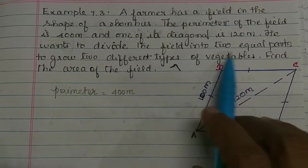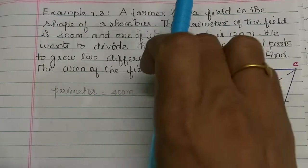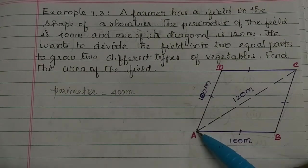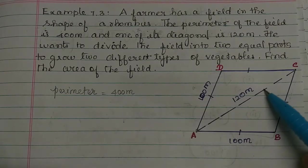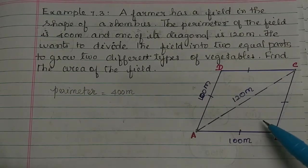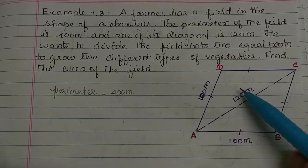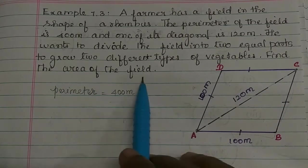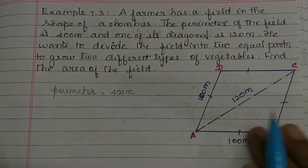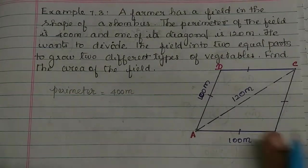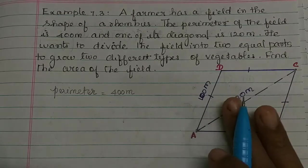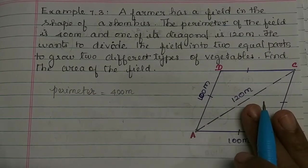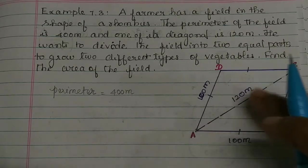He wants to divide the field into 2 equal parts. In the rhombus field, we divide it into two equal parts by drawing a line through the corner. Here is one part and here is the other part — in the two parts, there are two equal triangles. The area of the field is the total area, which is the area of the rhombus, but we are not using the rhombus formula directly.